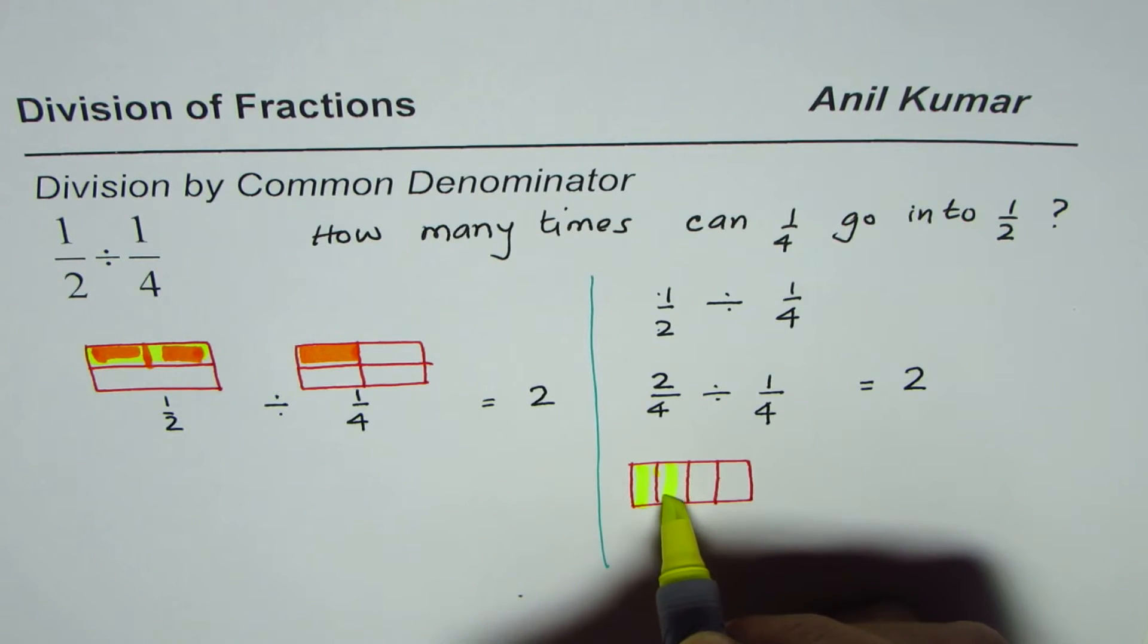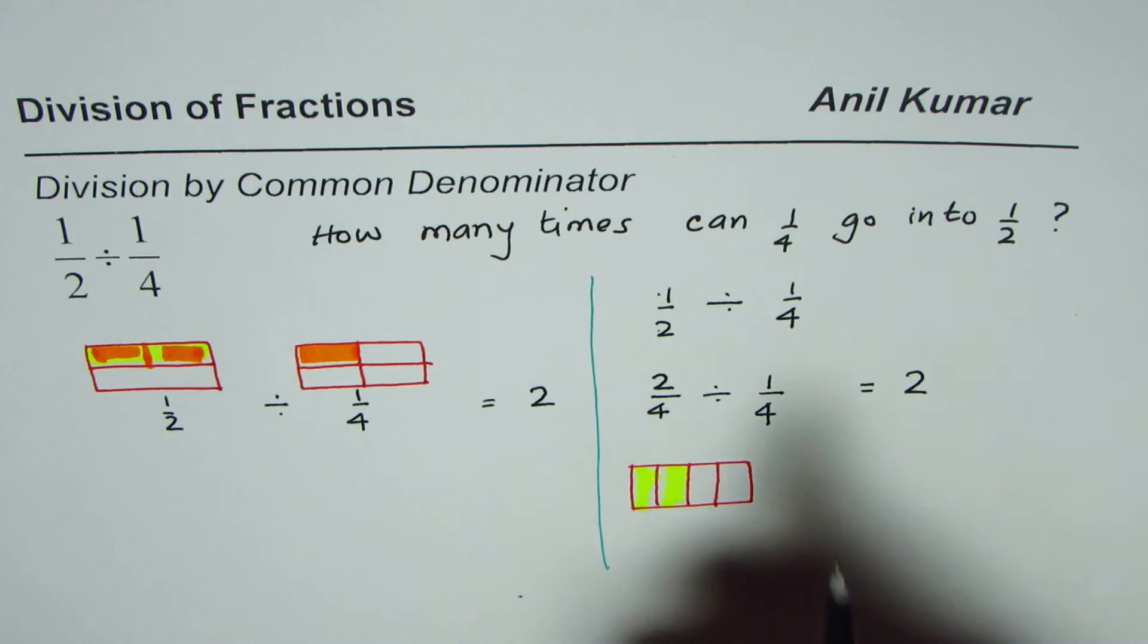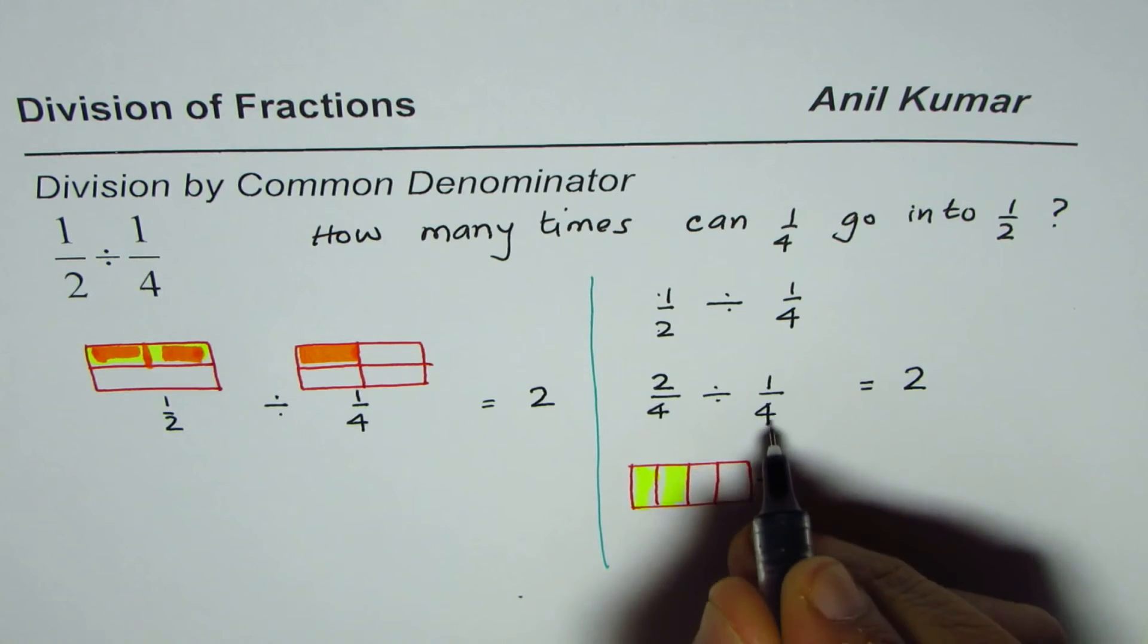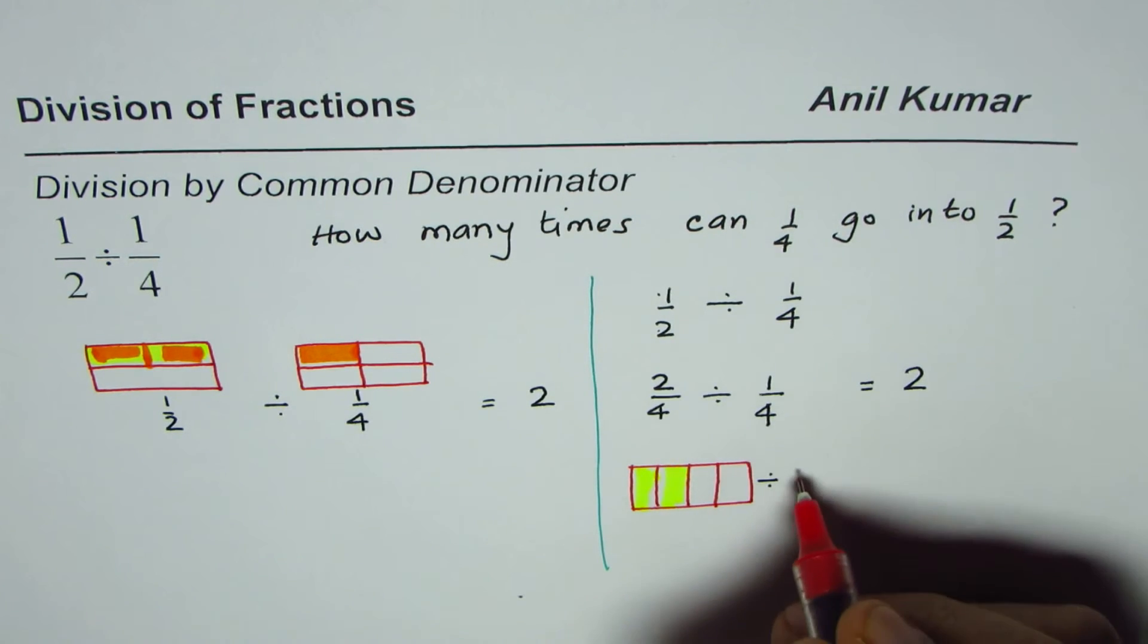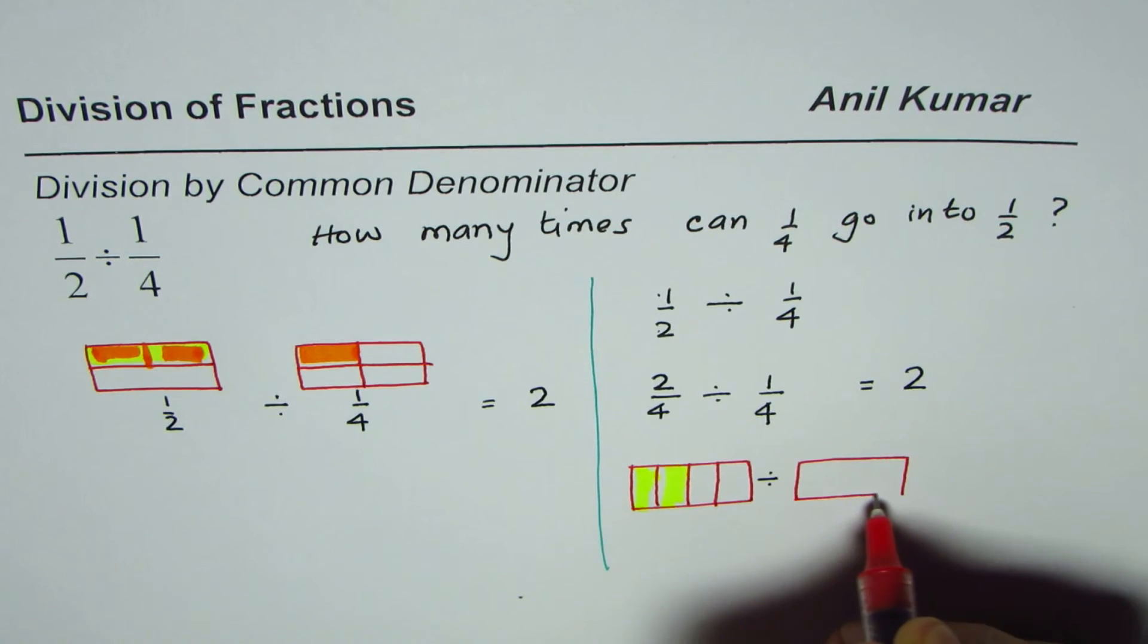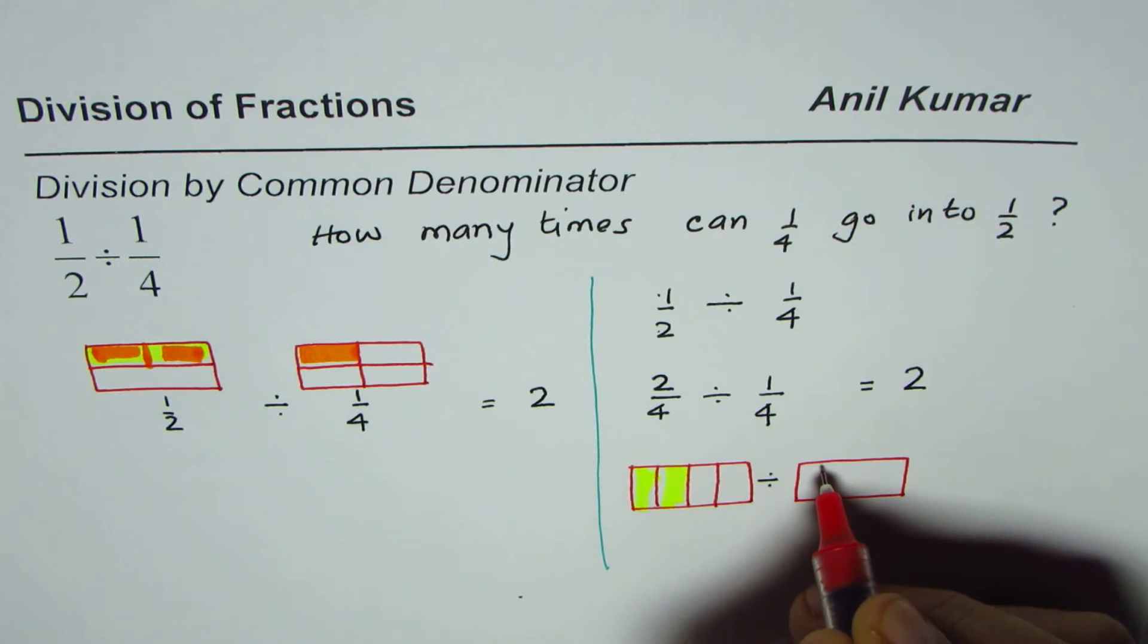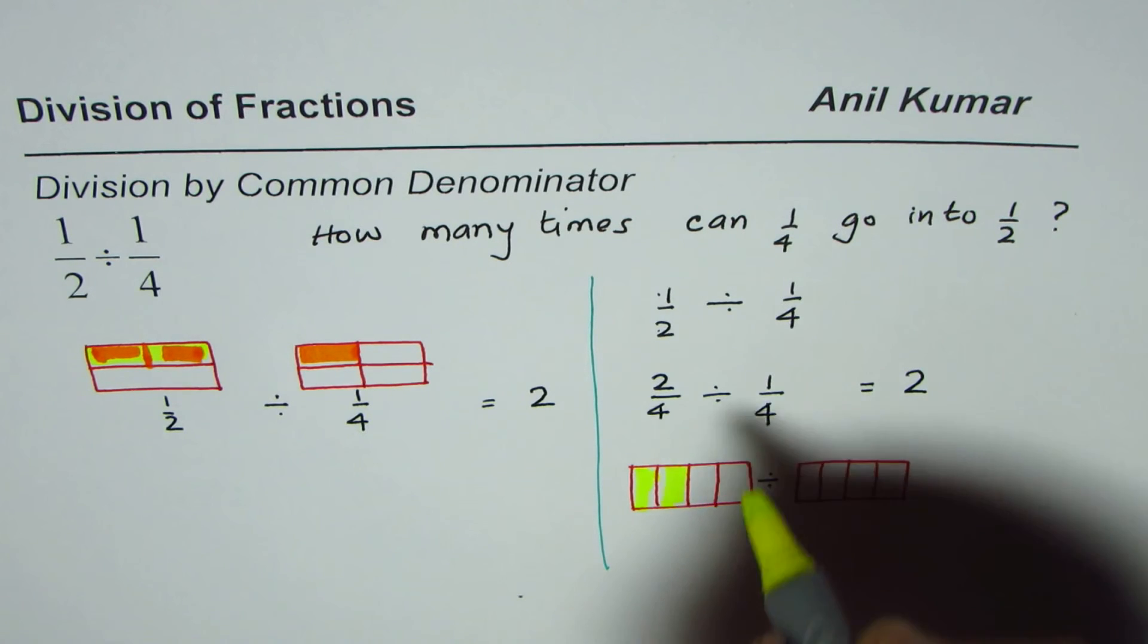These are the two parts we have shaded, so that is two out of four. We need to divide this by one out of four. So we make another rectangle here, divided into four equal parts just as we did last time, and one out of four is that part.